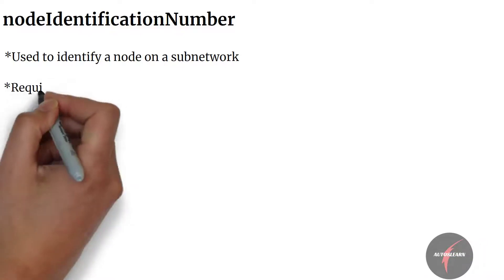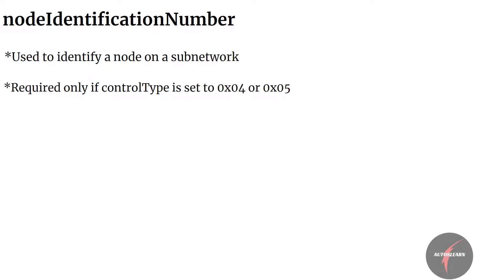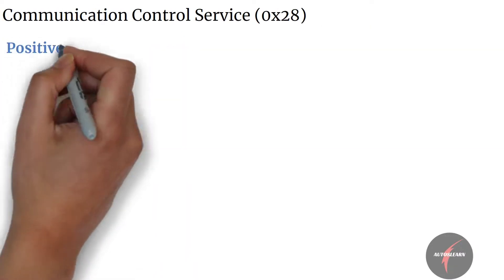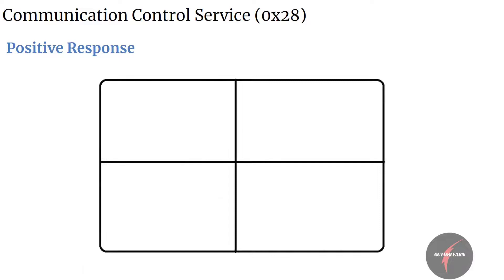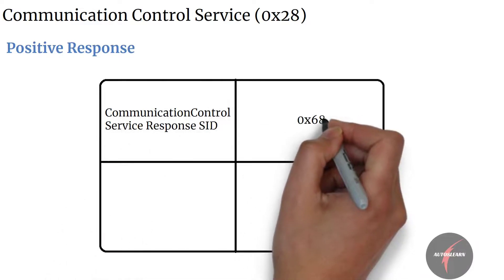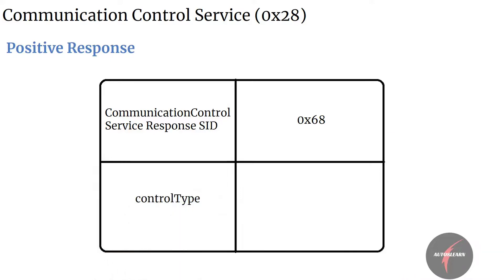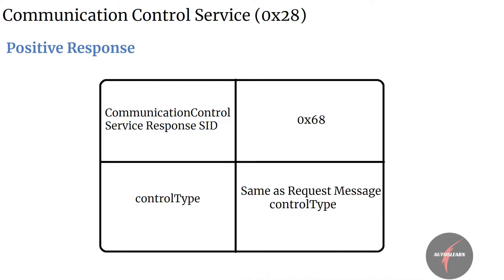Lastly, we have the node identification parameter. This parameter is used to identify a node on a sub-network somewhere in the vehicle. The parameter is only required if the sub-function parameter control type is set to 0x04 or 0x05. The positive response contains the communication control response SID 0x68, and the sub-function control type, which echoes bits 6 to 0 of the sub-function parameter from the request message.